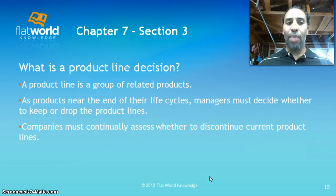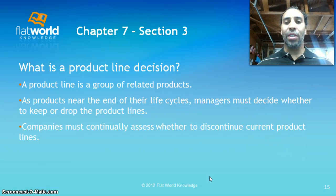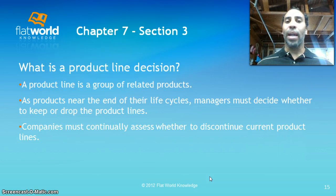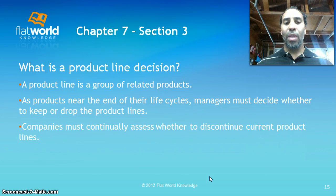What is a product line decision? A product line is a group of related products. As a product nears the end of its life cycle, managers must decide whether to keep or drop the product line. Consider a flip Razr phone — back in the day those were the phone to have, but you come toward the end of that product life cycle and you have to say we're not going to produce these anymore. Companies must continually assess whether to discontinue current product lines.